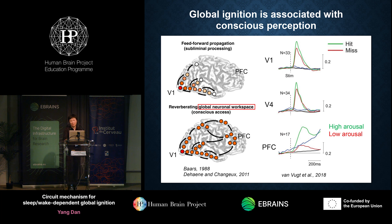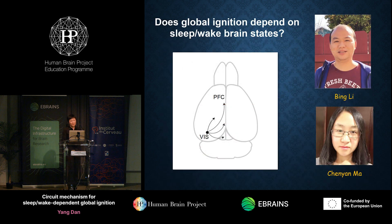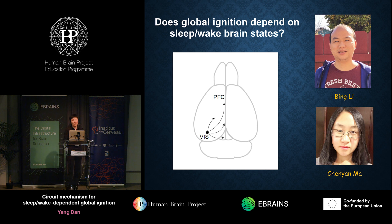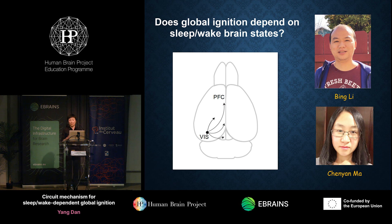Whether and how arousal regulates global ignition are unclear, so that's what we wanted to study in mice. As a first step, Bing Li and Chen Yan Ma, two postdocs in my lab, asked a very simple question: does global ignition depend on sleep-wake brain states? We know that the level of conscious awareness is greatly reduced during sleep, so we focused on the propagation of activity from the visual cortex to the rest of the brain, in particular the prefrontal cortex — or maybe the frontal cortex — because this propagation is important for detection of the visual stimulus.